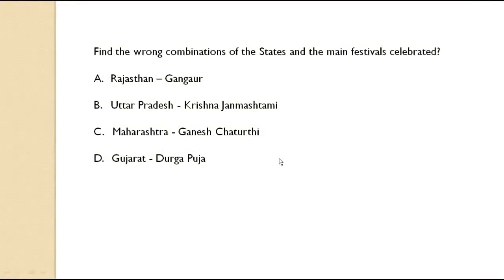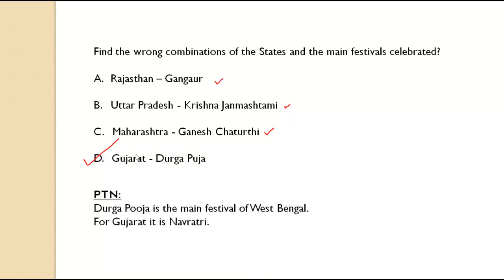Find the wrong combination of states and their main festivals. Rajasthan–Gangaur is correct; Uttar Pradesh–Krishna Janmashtami is correct; Maharashtra–Ganesh Chaturthi is correct. But Gujarat–Durga Puja is wrong, as Durga Puja is the main festival of West Bengal, not Gujarat.